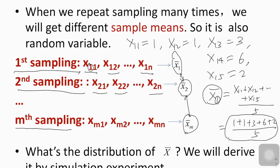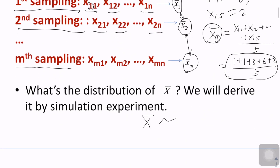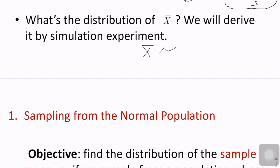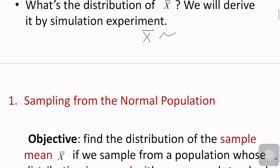Because those x-bars are not equal to each other, we can conclude that x-bar is a random variable — it is not a fixed number. Since x-bar is a random variable, we would like to know what kind of distribution it follows. We will derive this through a simulation experiment.